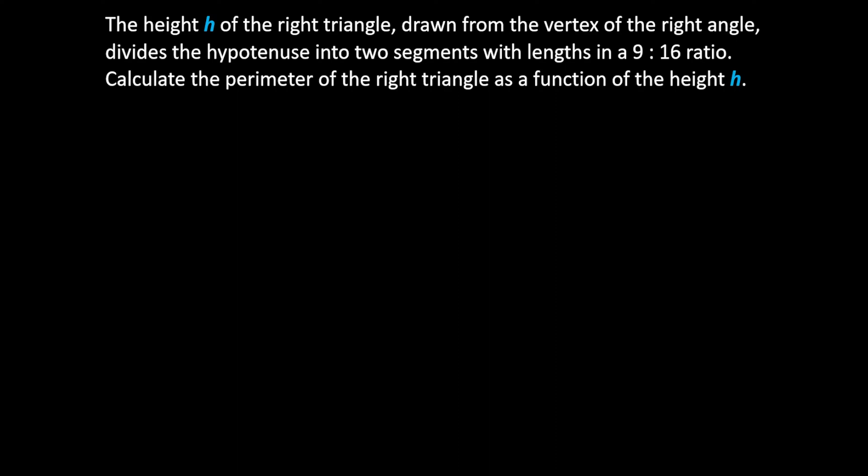The height h of the right triangle drawn from the vertex of the right angle divides the hypotenuse into two segments with lengths in the 9 to 16 ratio. Calculate the perimeter of the right triangle as a function of height h.